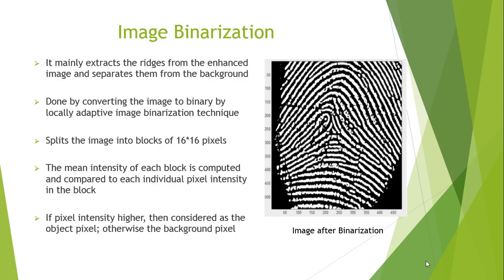The next step after image enhancement is image binarization. It mainly extracts the ridges from the enhanced image and separates them from the background. It is done by converting the image to binary using a locally adaptive image binarization technique. This technique involves splitting the image into blocks of 16x16 pixels, then the mean intensity of each block is computed and compared to each individual pixel intensity in the block. If the pixel intensity is found to be higher, then it is considered the pixel object; otherwise it is the background. The figure shows the image after binarization is implemented.